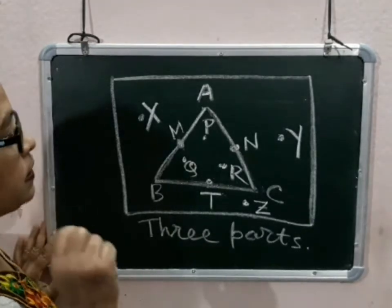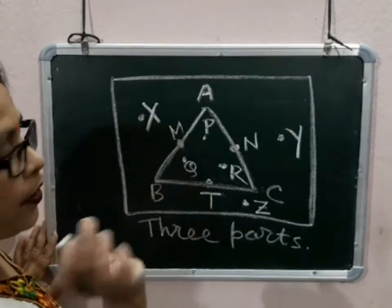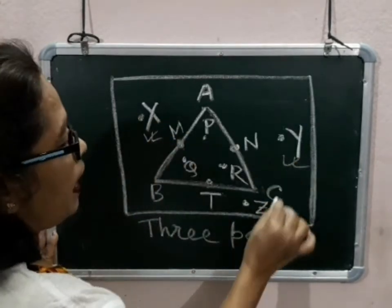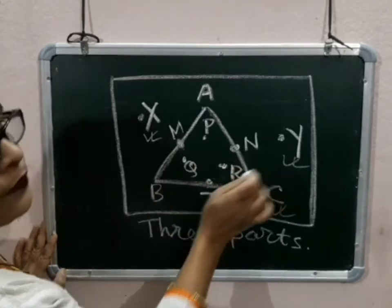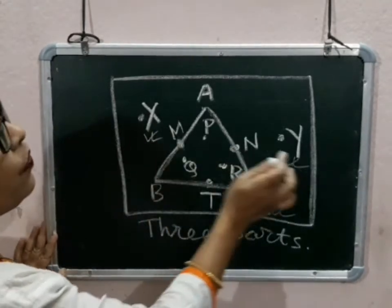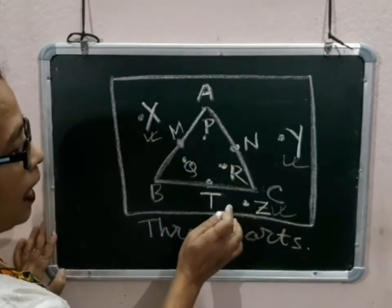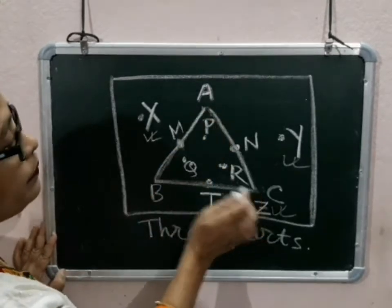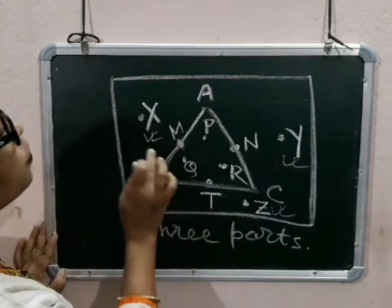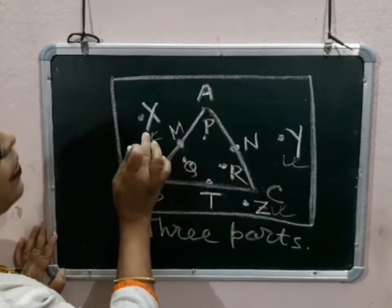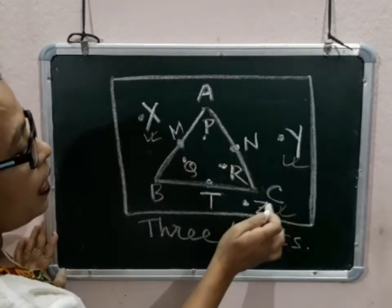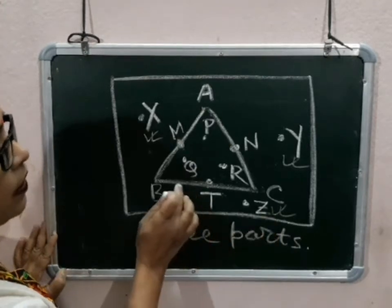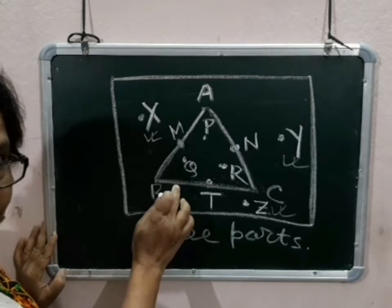Now, next look at the points X, Y and Z. Where are these points? X, Y, Z are outside of the triangle ABC. So these points X, Y and Z are the exterior of the given triangle ABC.